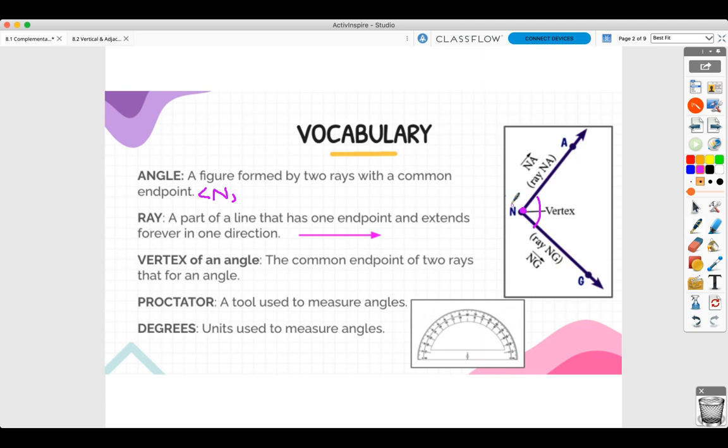And where the vertex is in the middle, so this angle is also angle A, N, G, or angle G, N, A. And notice that the vertex is in the middle. You can't say angle G, A, N. Again, the vertex always has to be in the middle.